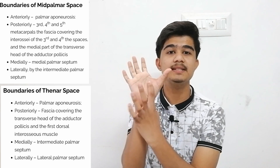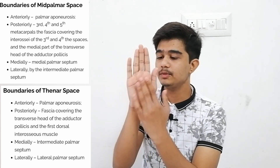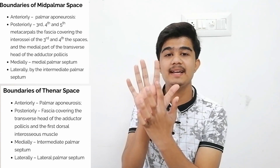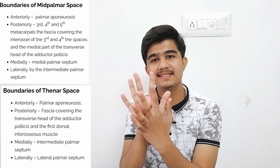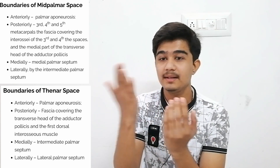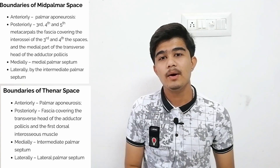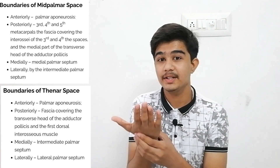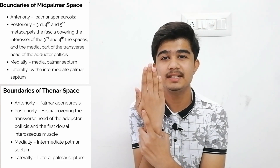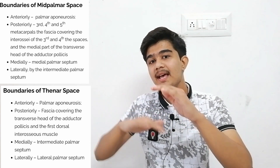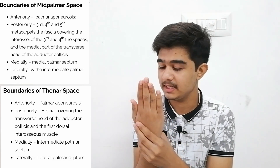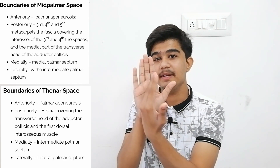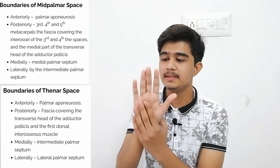Now if we talk about the thenar space — this is my thenar space. The anterior boundary is the same: palmar aponeurosis, flexor digitorum superficialis of the index finger, flexor digitorum profundus of the index finger, and then flexor pollicis longus. That is the anterior boundary of the thenar space. The posterior boundary includes the extensor tendons and interosseous muscle, but one more thing is the adductor pollicis — that is the posterior boundary of thenar space. Laterally, the lateral palmar septum, and medially the intermediate palmar septum.